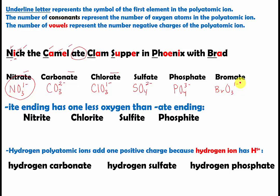Now, if you know the polyatomic ion formula for the -ate ending, you also know the formula for the -ite ending. The -ite ending has one less oxygen atom than the -ate ending. So nitrite comes from nitrate — since nitrate has three oxygen atoms, nitrite has two: NO2 one minus. Chlorite comes from chlorate — instead of three, chlorite has two oxygen atoms. Notice the charge does not change; the charge for -ite and -ate endings is the same.